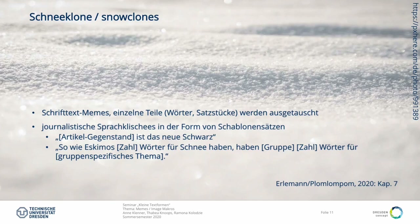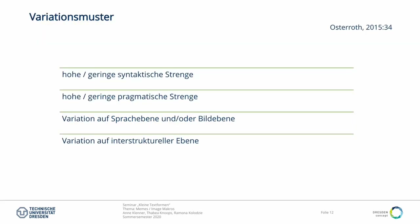Ich habe ja schon kurz von Phrasen gesprochen, die in einigen Memes immer wieder vorkommen. Sowas nennt die Community Snow-Clones oder Schneeklone. Dabei handelt es sich also um Schrifttext-Memes, in denen Wörter oder Phrasen ausgetauscht werden können. Warum das Ding Schneeklon heißt, wird klar, wenn man sich den Schablonensatz ansieht, der ganz typisch ist im Journalismus: 'so wie Eskimos eine bestimmte Anzahl an Wörtern haben für Schnee' und so weiter – daher Schneeklon. Außerdem weisen verschiedene Memes auch unterschiedliche syntaktische und pragmatische Stränge auf. Ich möchte noch kurz eine Möglichkeit vorstellen, wie man Image Makros ordnen kann: Andreas Osteroth hat festgestellt, dass Image Makros auf Sprach- und Bildebene variieren können und auch auf interstruktureller Ebene – wenn sich ein Meme auf ein anderes bezieht.